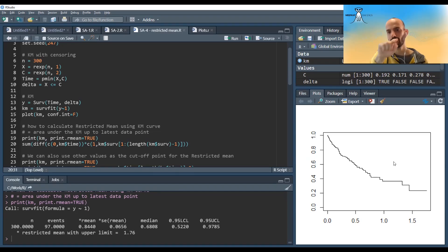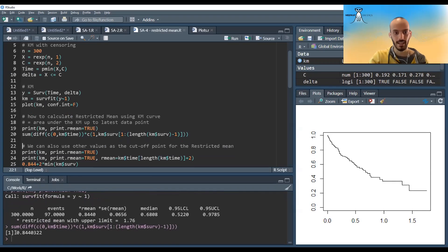I can also calculate it manually. Technically, this curve just goes in steps, so I can just take the small intervals and then multiply them by their height and get the area under this curve. And this is what I did here, and you can see I'm getting exactly the same result.